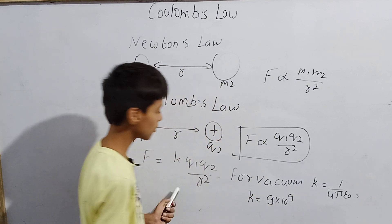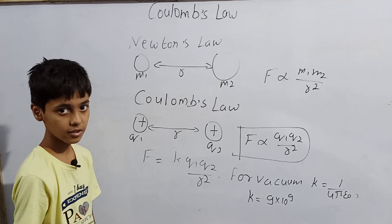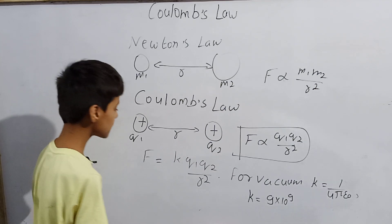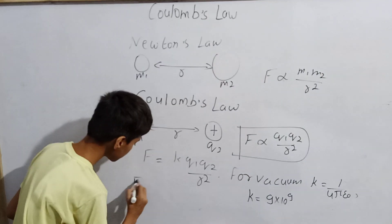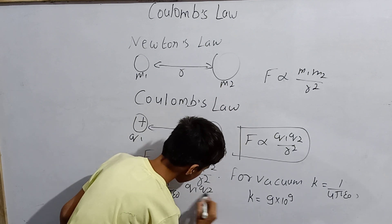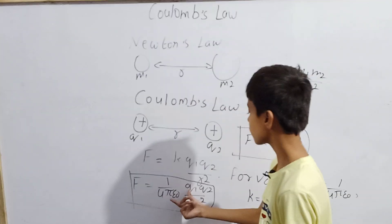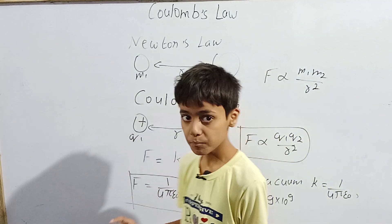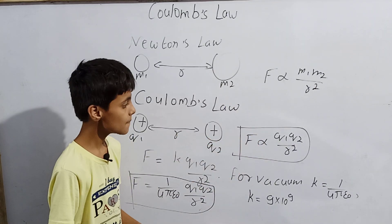So in SI units, K = 9×10⁹. At the place of K, we can put 1/(4πε₀), giving us the final equation: F = (1/4πε₀) × Q1Q2 / R². This is our final equation. The electrostatic force equals 1/(4πε₀) multiplied by Q1×Q2 divided by R², meaning the force is directly proportional to the product of the charges and inversely proportional to the square of the distance between them.